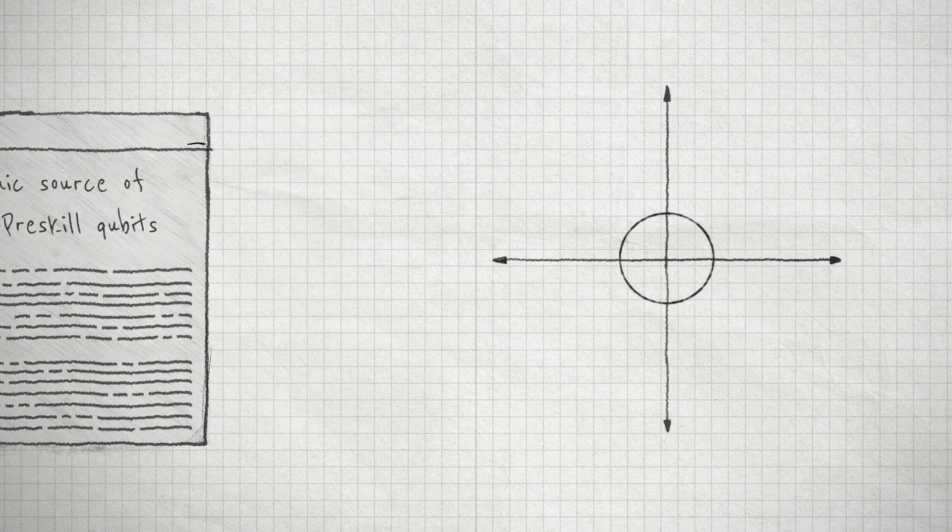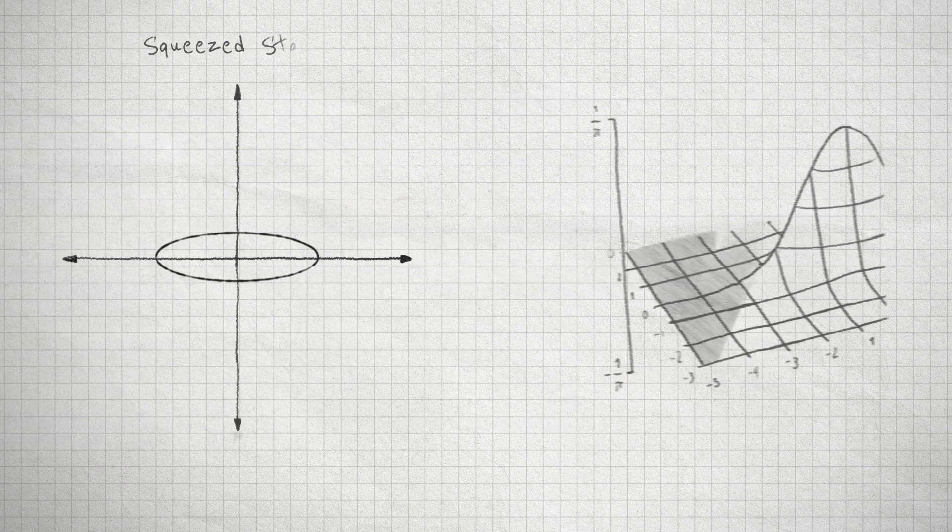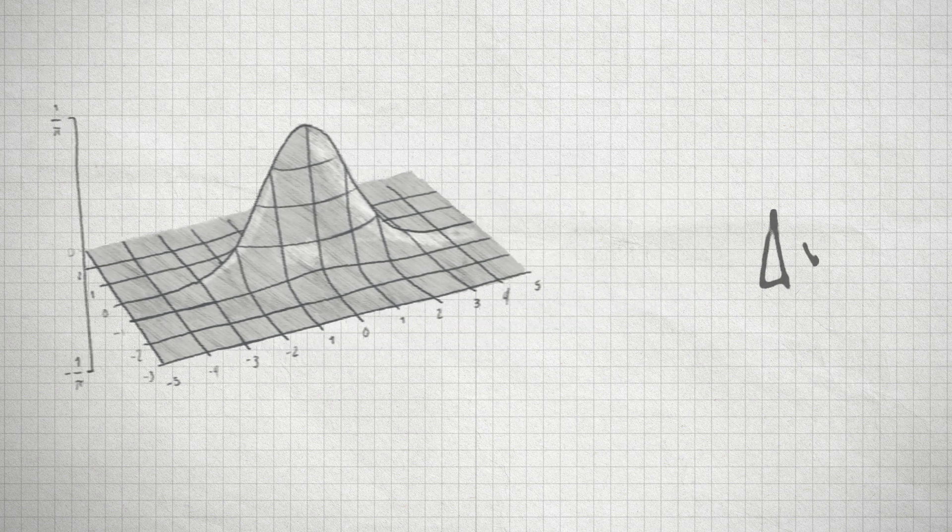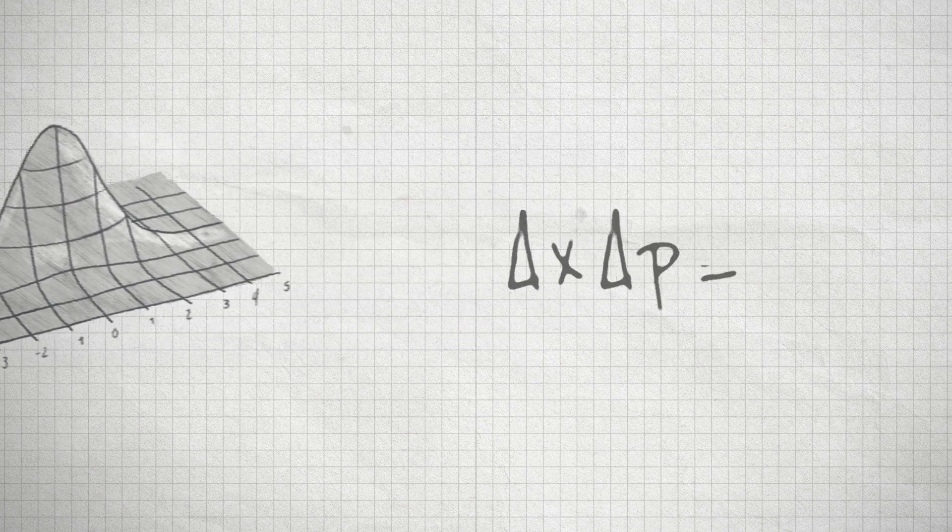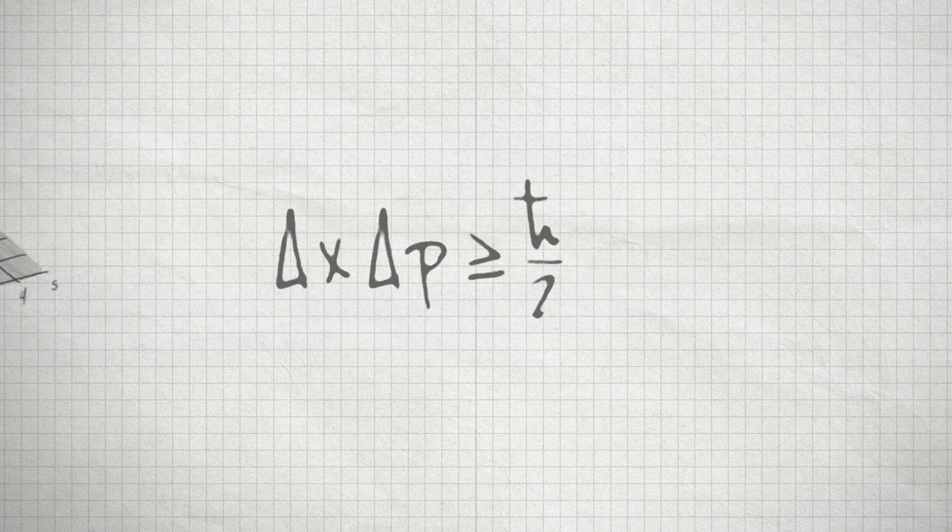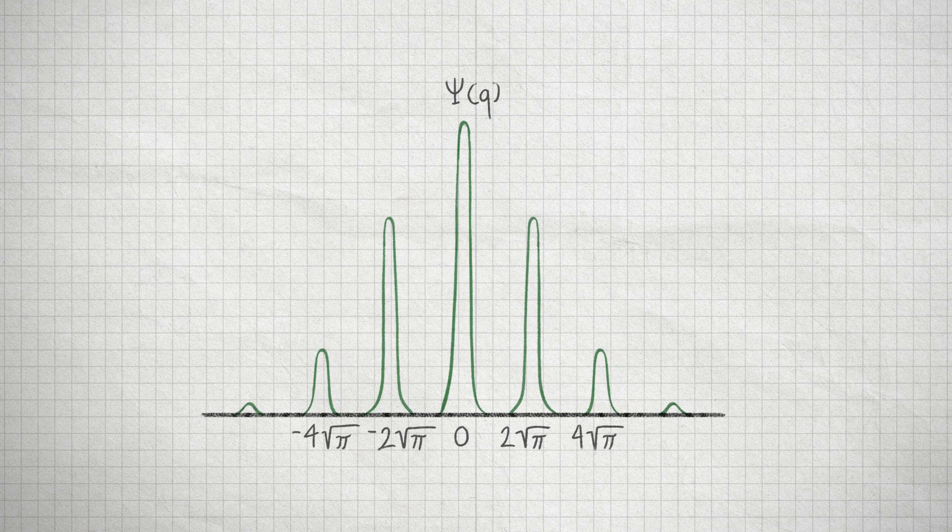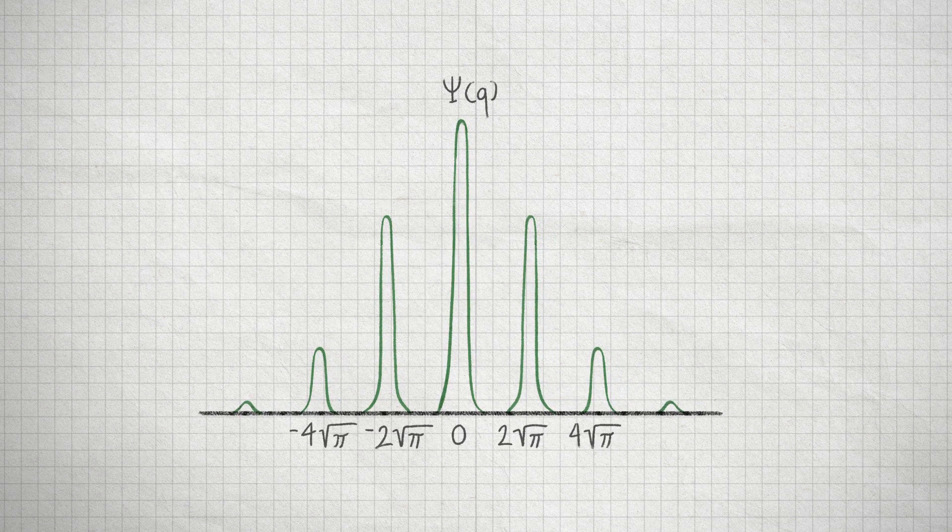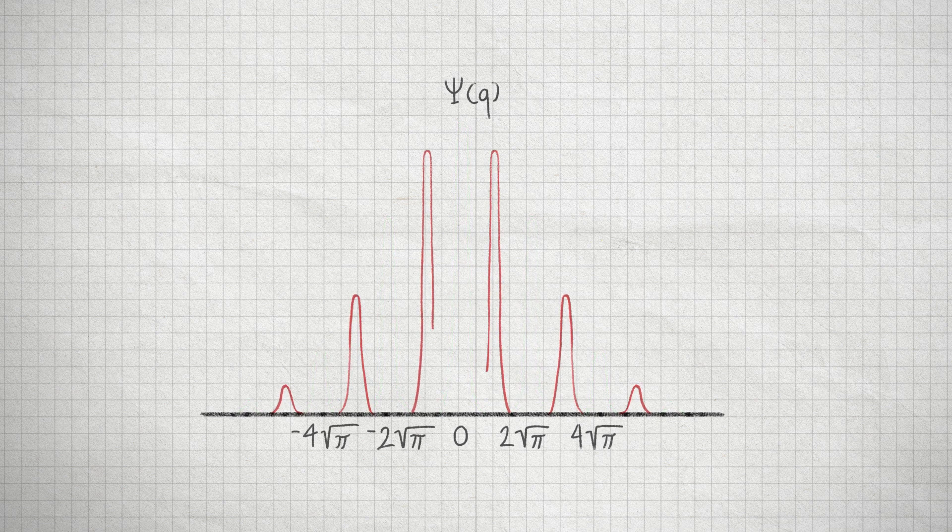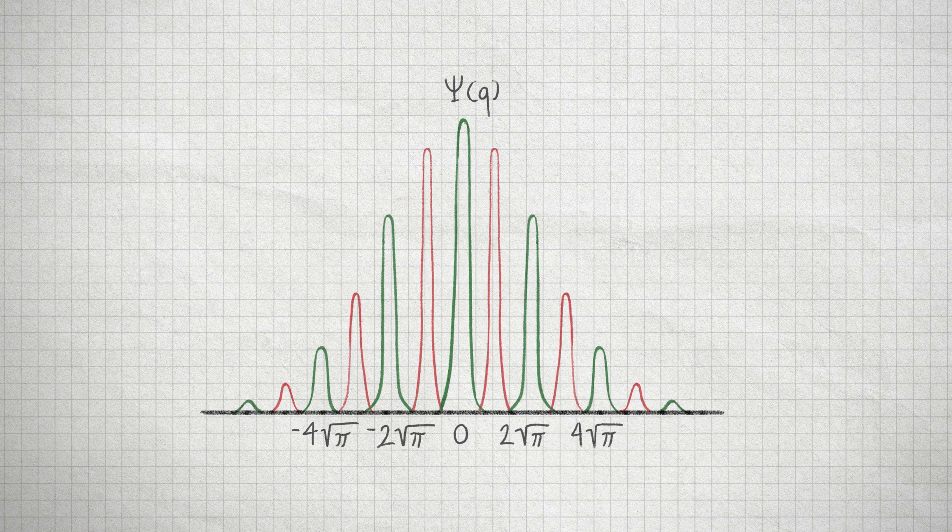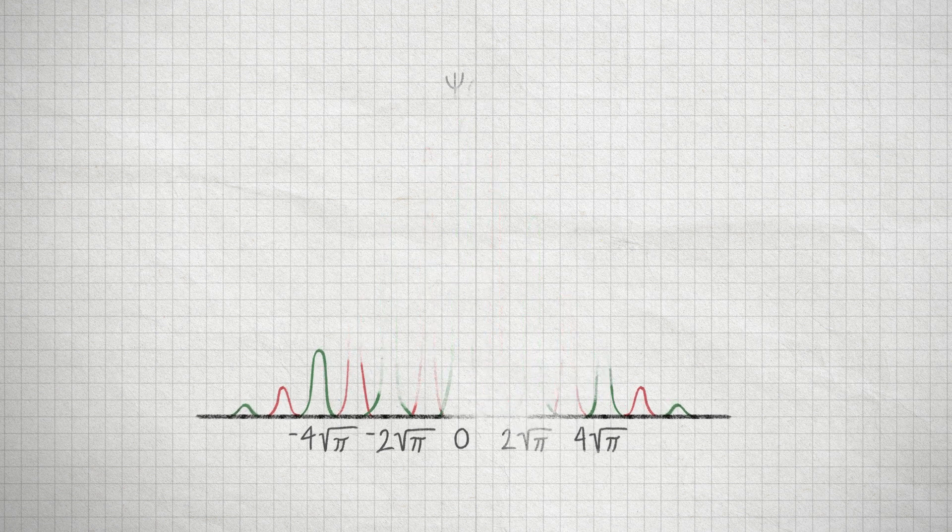To describe GKP qubits, we need to understand simpler quantum states called squeeze states. These states are created by reducing the quantum fluctuations in one part of a light field, while allowing it to increase in another part, in accordance with the Heisenberg uncertainty principle. The wave function of a GKP logical zero looks like this, while a logical one's wave function looks like this. Both wave functions are superpositions of squeeze states equally spaced apart.